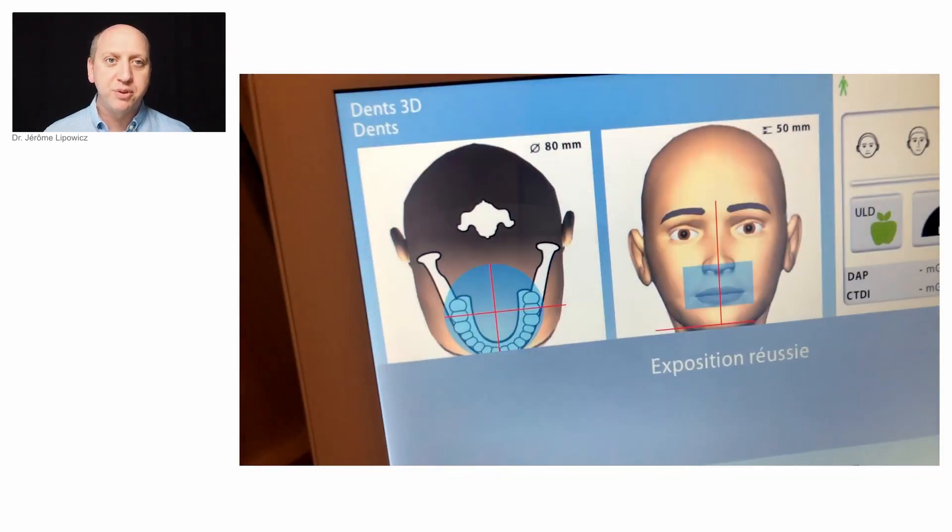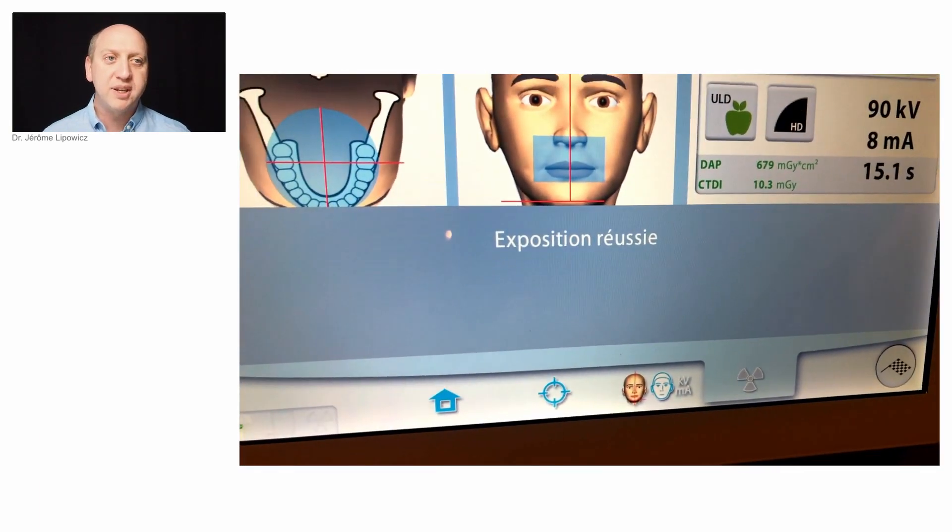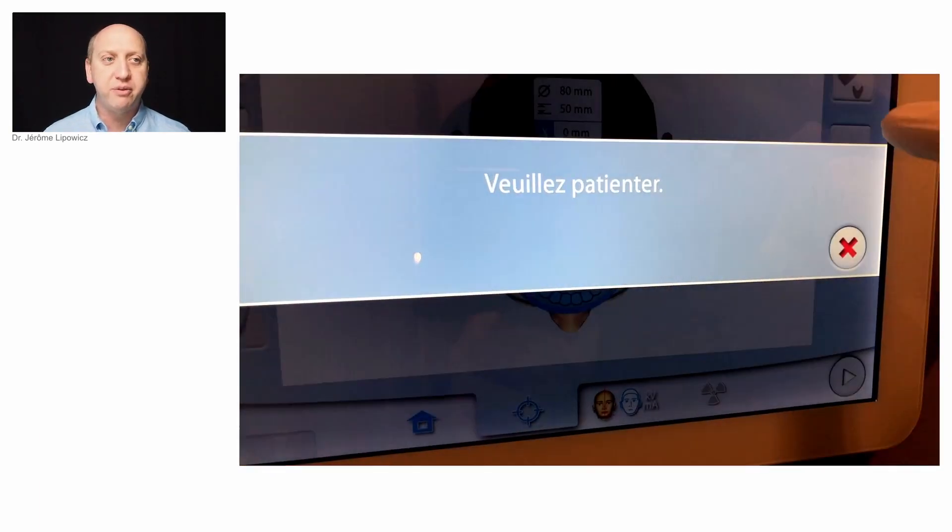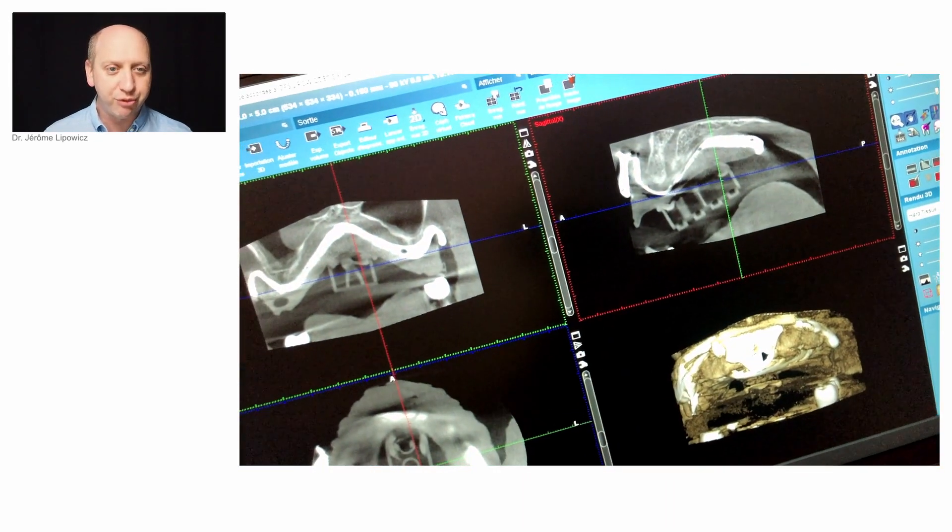And this moment is very interesting because with no effort we get a fiduciary marker that is very easy to read on the cone beam CT with a simple Lego brick.